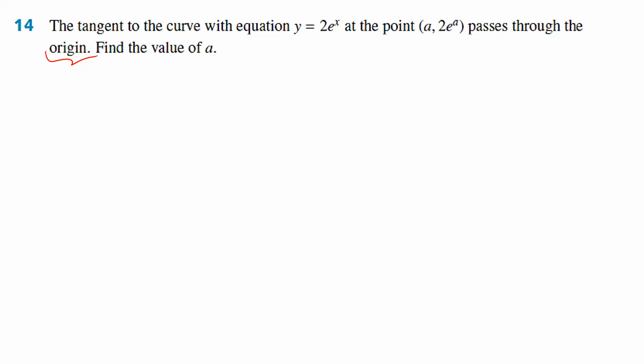If it passes through the origin, what do we know? It is (0, 0), which is the point, yes. And what else? Something more important based on how they worded the question. A lot of students overlook this part when reading the question. There's a y-intercept at 0 — but y-intercept of what? The tangent line.